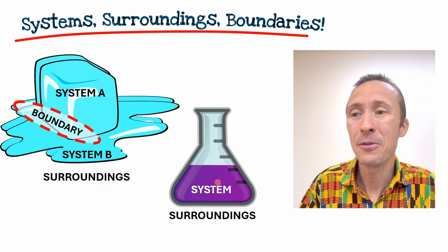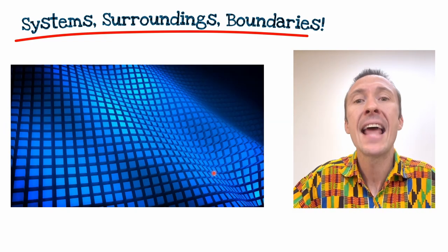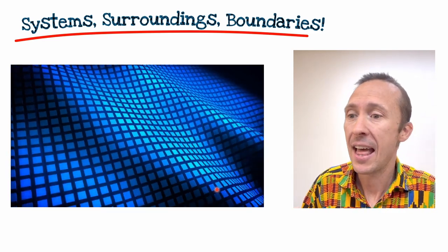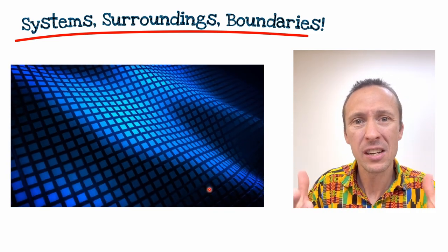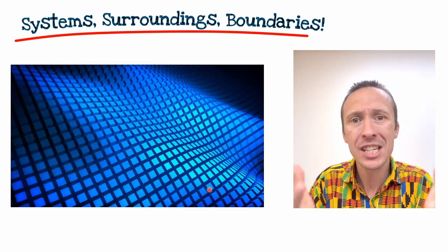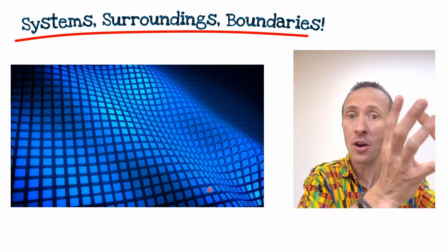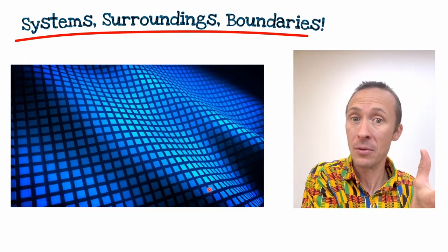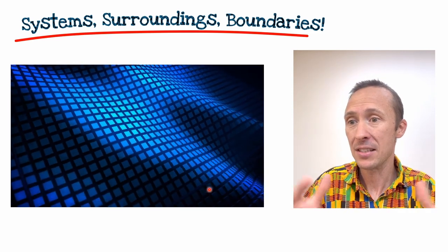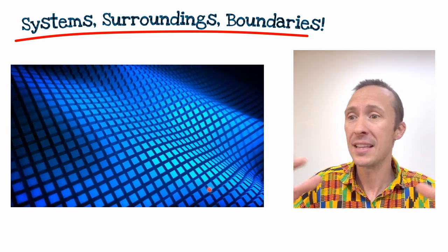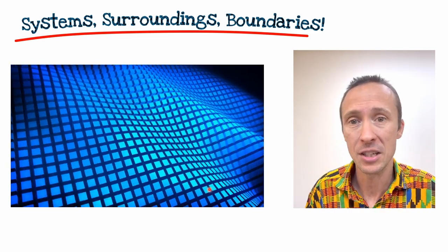Or the boundary may be some imagined intangible surface that is not a real thing. It just might be some region in space that we say, over here is the system, and over here is the surroundings kind of thing. And if that boundary might be fluid, then the system may be fluid and change as well.